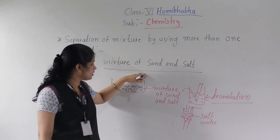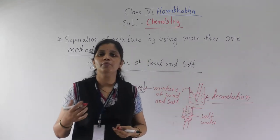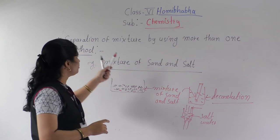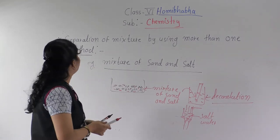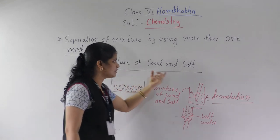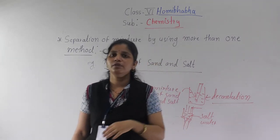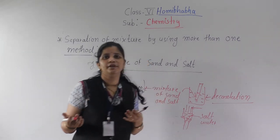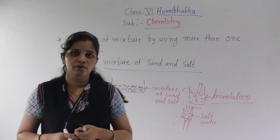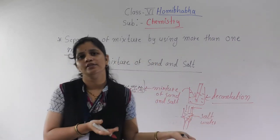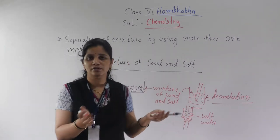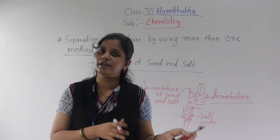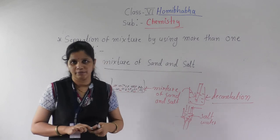This mixture is separated by using more than one method. The example is sand and salt. Now, this sand can also be separated using the filtration method — the residue we get is the sand, and water remains. So filtration can also be used here, and for the remaining water, we use condensation or evaporation to get the salt.